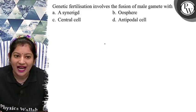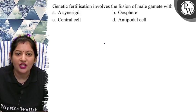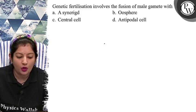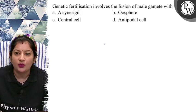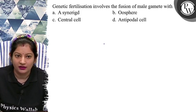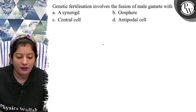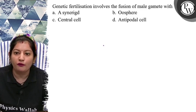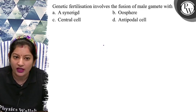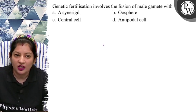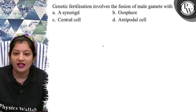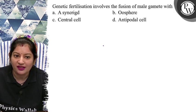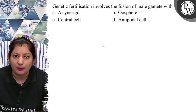Hello bachu, let's see this question. Genetic fertilization involves the fusion of male gamete with — Option A is synergid, Option B is oosphere, Option C is central cell, Option D is antipodal cell.